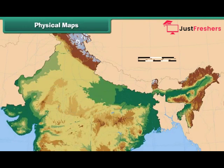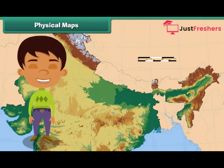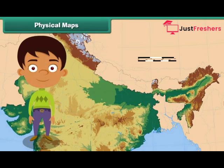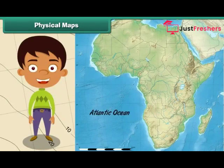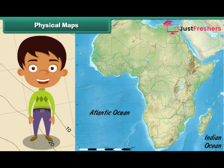Physical maps illustrate the physical features of an area such as mountains, rivers and lakes. Water bodies are usually colored blue in a physical map. Different colors are used to show different land elevations: green for lower elevations and orange or brown for higher elevations. For example, the physical map of Africa shows the African continent located between the Atlantic Ocean on the west and the Indian Ocean in the east. The African continent is also shown as sharing its northeast border with the Red Sea.